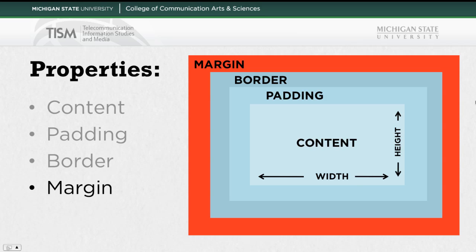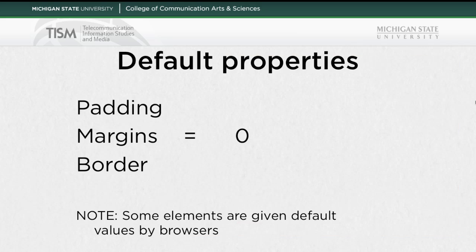Last but certainly not least is margin. This pushes the other content on the page away from this element. It adds invisible space outside of the content, padding, and border. The default properties of all of these things are zero, with one special caveat: some elements are given a default value by browsers. Older versions of Internet Explorer, for instance, sometimes add some space there, which is really annoying.